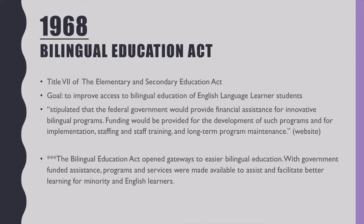The Bilingual Education Act was enacted in 1968. Title VII of the Elementary and Secondary Education Act is also considered the Bilingual Education Act. Its goal is to improve access to bilingual education for English language learner students. It stipulated that the federal government would provide financial assistance for innovative bilingual programs, including funding for development, implementation, staffing, and staff training. This act opened gateways to easier bilingual education, making it easier to get the staff needed and maintain bilingual education programs to assist better learning for minority and English learners.